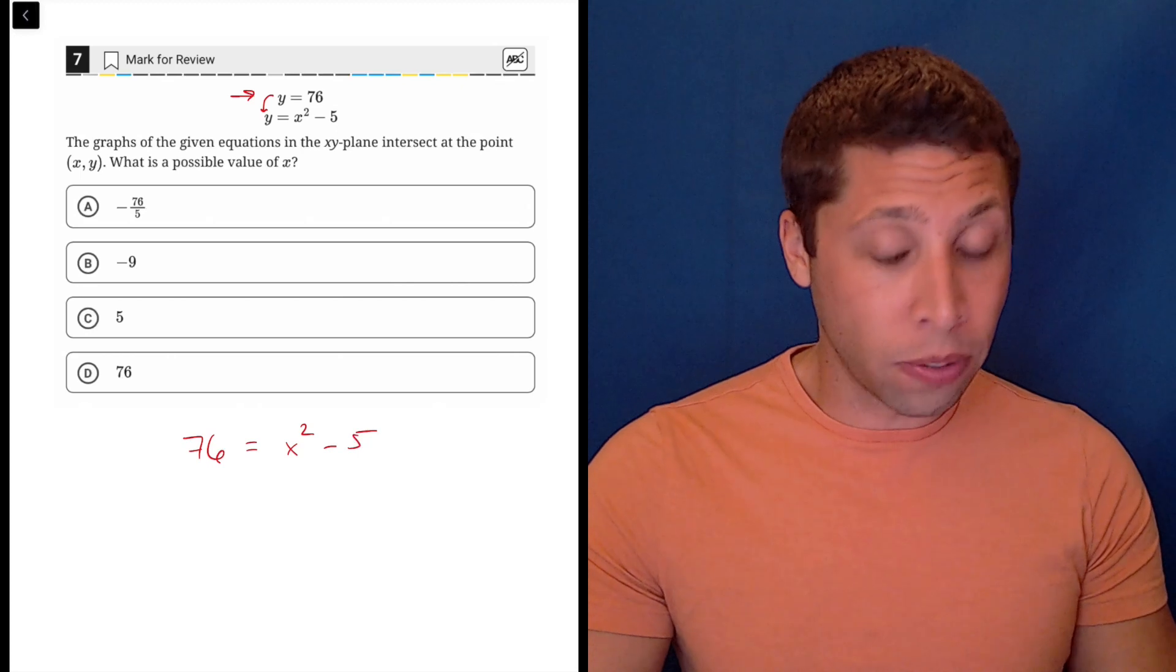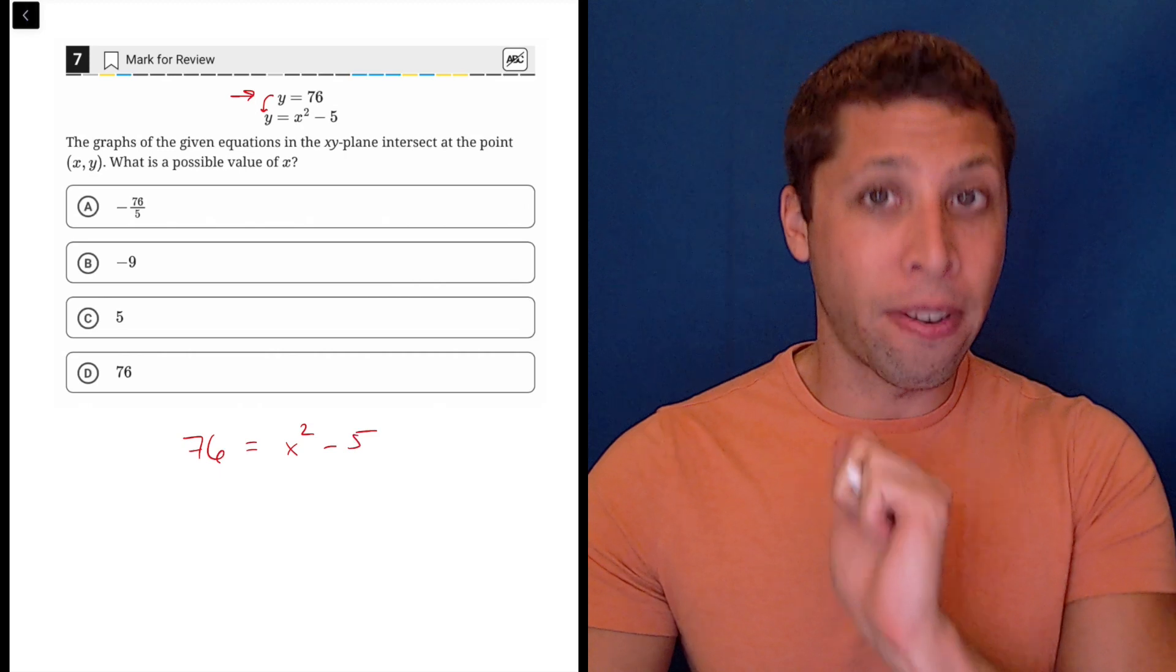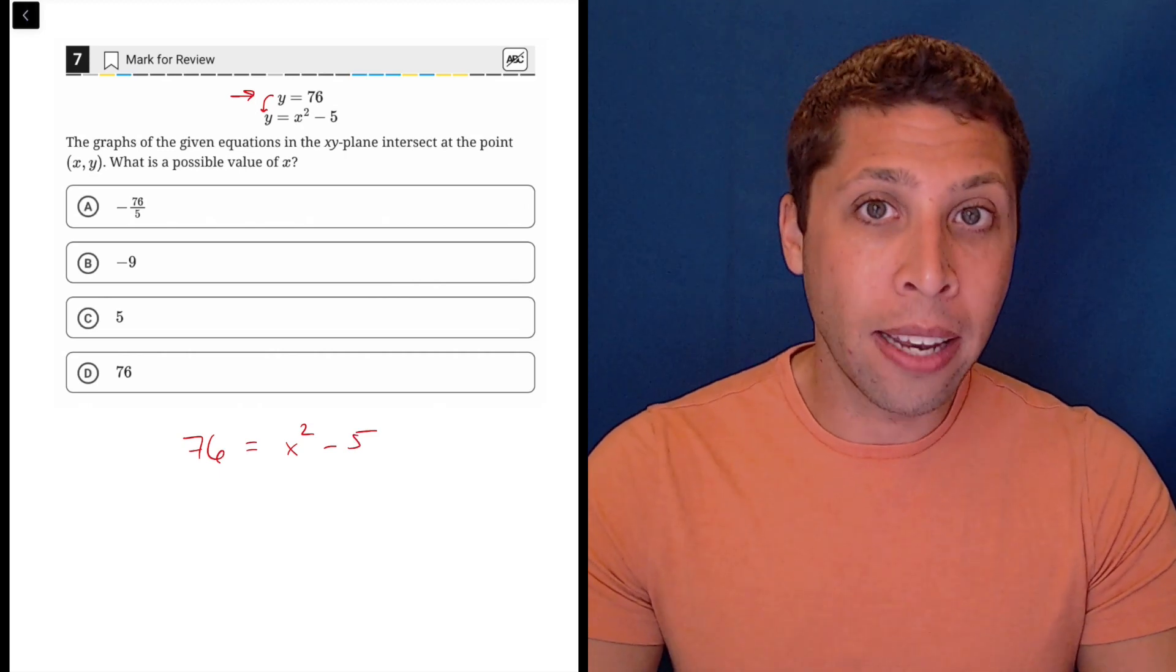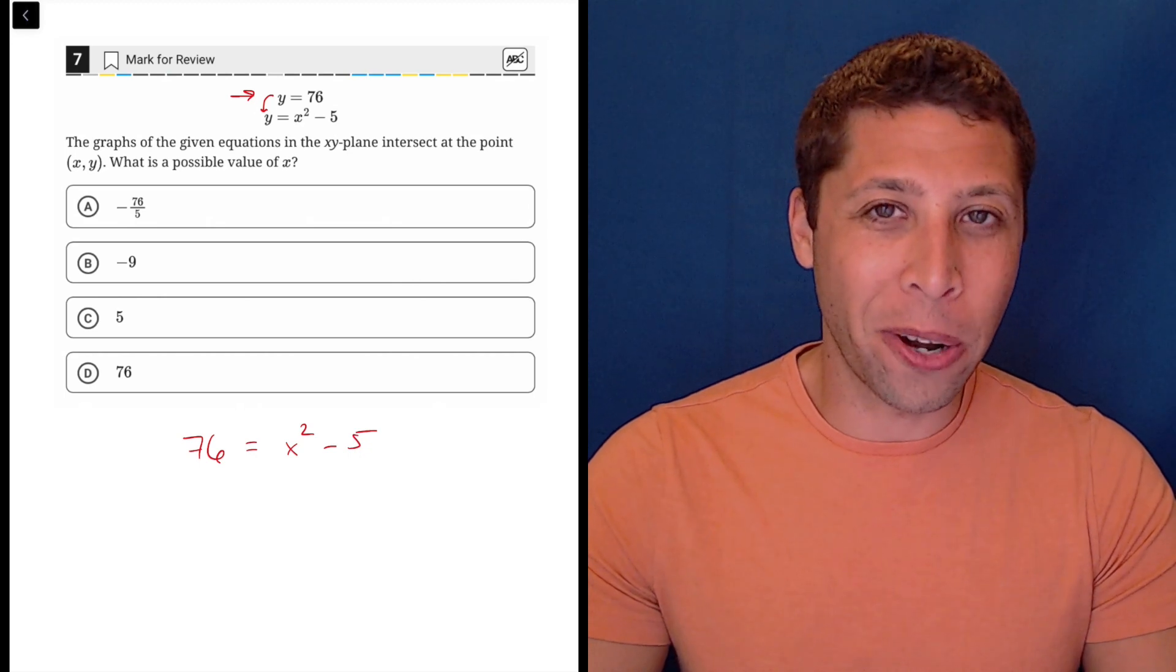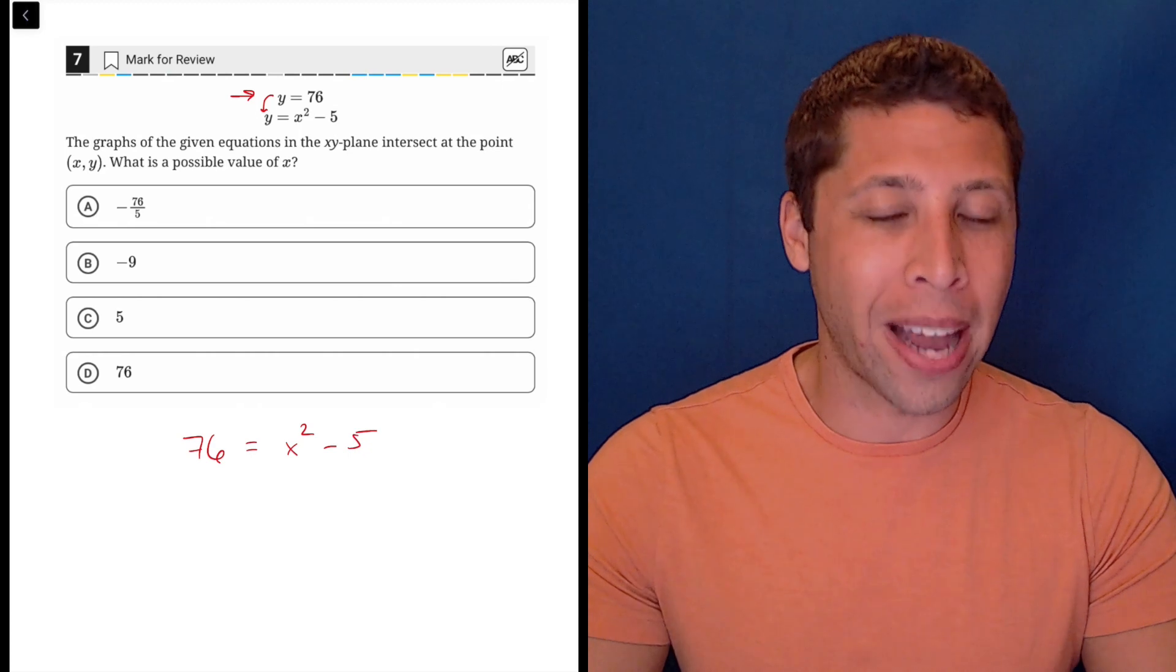And you can solve this in two different ways. I think what many of you learn in school is to get X by itself. So you're going to add five to both sides, but I think that that's a bad habit. I think that we learn that when we're kind of new to X squared situations and we kind of form a bad habit.